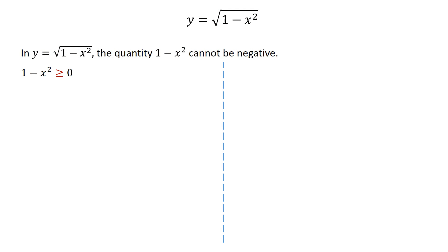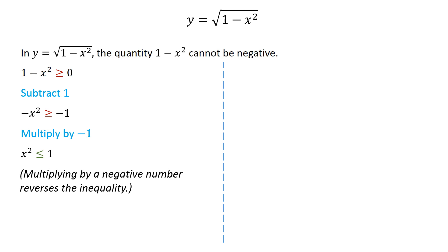For real values of y, the quantity 1 minus x squared cannot be negative. That is, 1 minus x squared should be greater than or equal to 0. Subtracting 1 from both sides of this inequality, we get negative x squared is greater than or equal to negative 1. Multiplying this inequality by negative 1, we get x squared is less than or equal to 1. Note that multiplying by a negative number reverses the inequality.